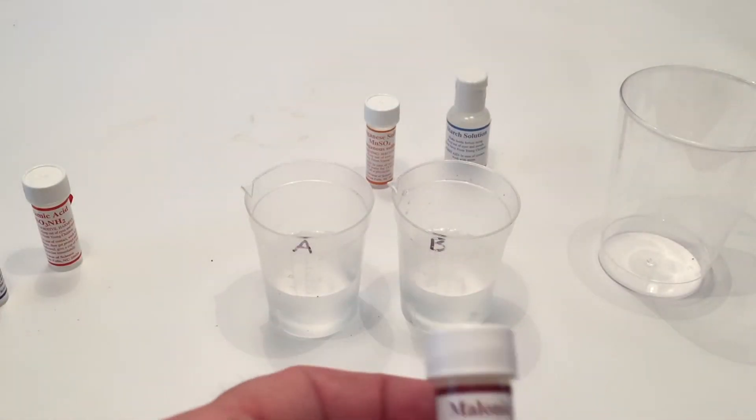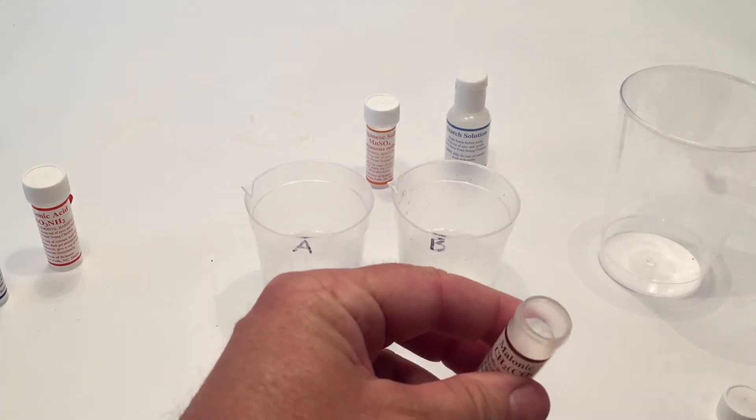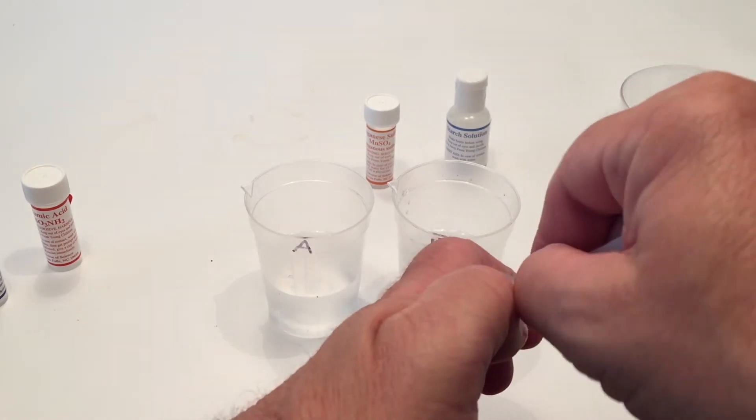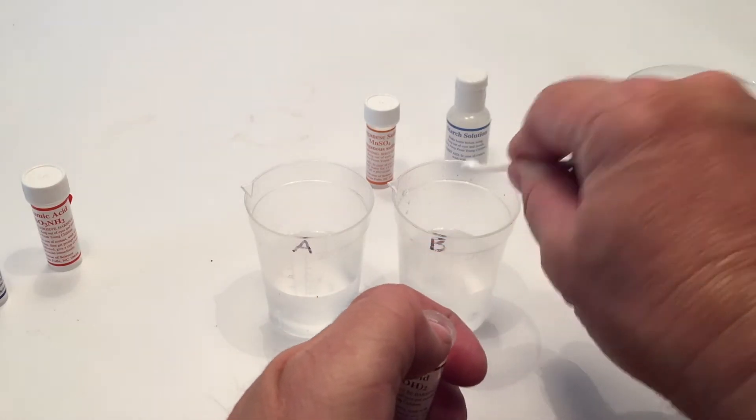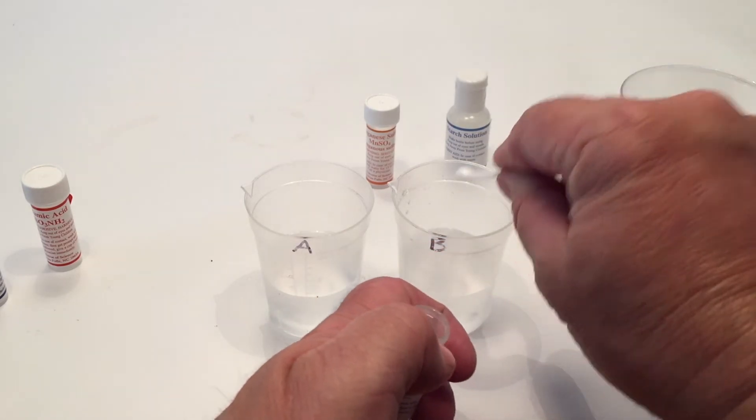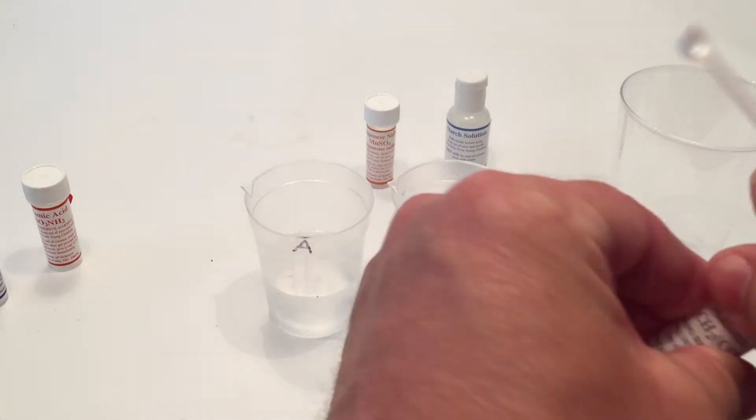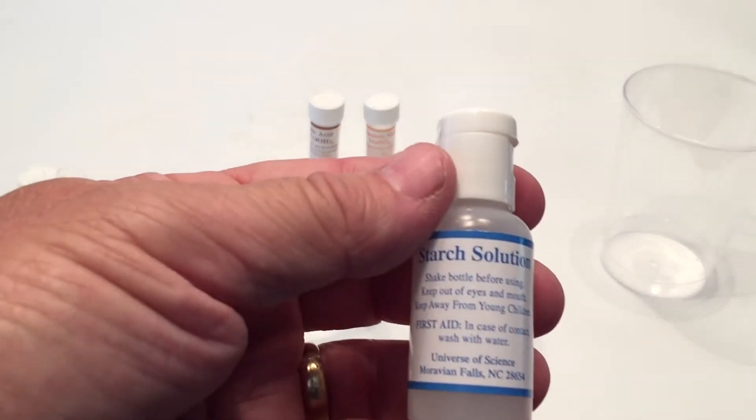And then we're going to do four scoops of the malonic acid. So four scoops here, I'm adding into cup B. Make sure you don't have it too high. I'm kind of just pat it down so it's a good scoop. And once we get those four scoops in, then we're going to want to stir that solution so it's completely dissolved.